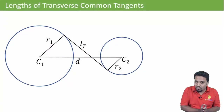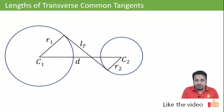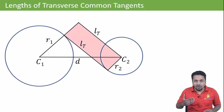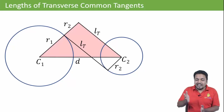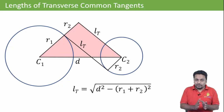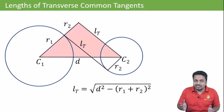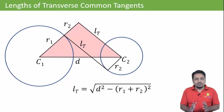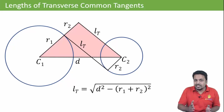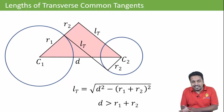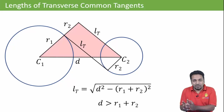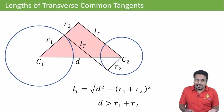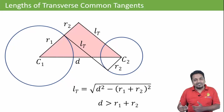We can also draw an internal common tangent. Construct a line parallel to the tangent passing through center C2 and extend r1. Again we have a rectangle with the side opposite to r2 as r2. We then have a right triangle with sides D, Lt, and r1 plus r2. So Lt according to Pythagoras theorem equals the square root of D squared minus (r1 plus r2) squared. This gives the length of both internal common tangents, which can only be drawn if the two circles are not intersecting — so D should be greater than r1 plus r2.